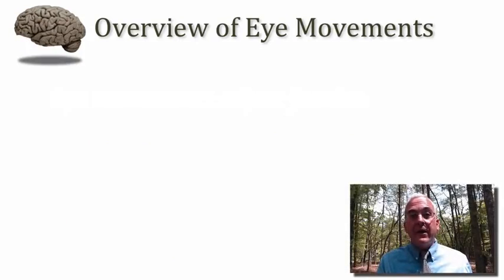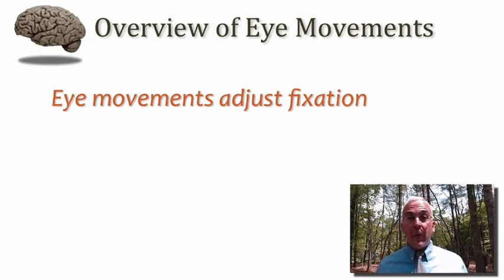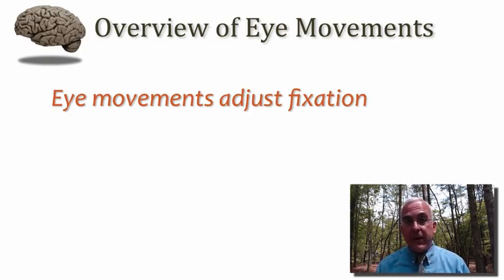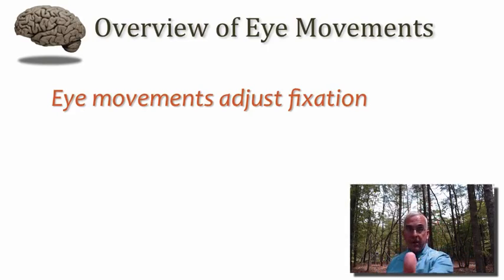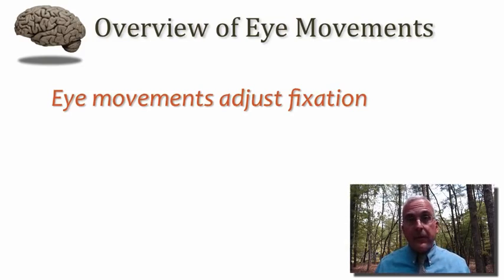Let's begin by talking in very broad terms about the goal of making eye movements. The usual goal is to adjust fixation. Remember from our studies of the retina and visual pathways that what we actually look at closely with high visual acuity is a fairly small region of the visual world. In fact, if I were to extend my thumb at arm's length, the width of my thumb is roughly that portion of visual angle that's actually seen well by the macula and, at the center of the macula, the fovea.